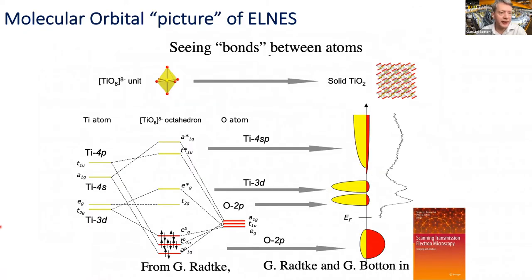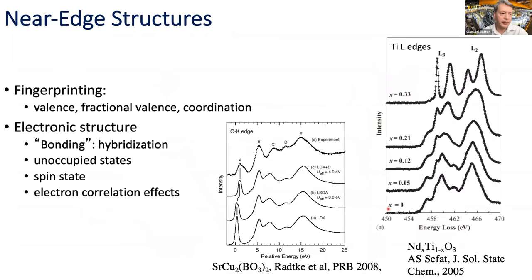Another example: titanium dioxide with octahedral units. For Ti4+ in TiO2, the titanium 3d, 4s, and 4p states are all unoccupied molecular orbitals. Combined with oxygen states into bonding and anti-bonding orbitals and bands, the oxygen K-edge spectrum shows the unoccupied states on the oxygen site being excited. You can do fingerprinting, simple interpretation of valence state, fractional valence, coordination, bonding information, and spin state — just as XANES would provide.